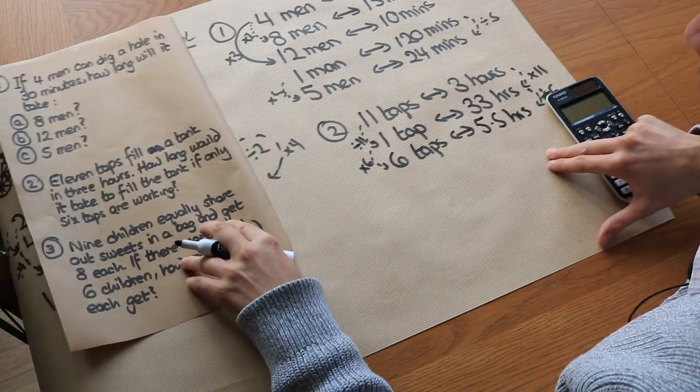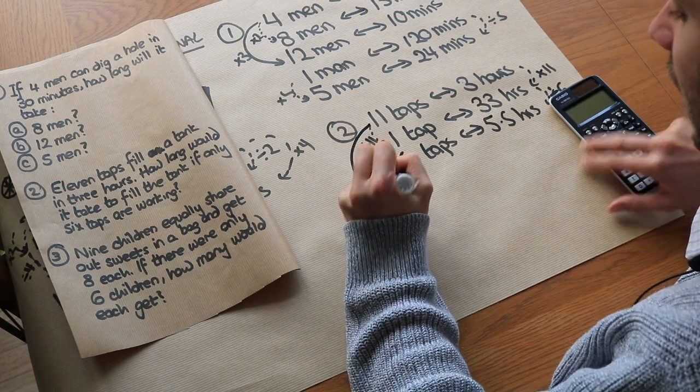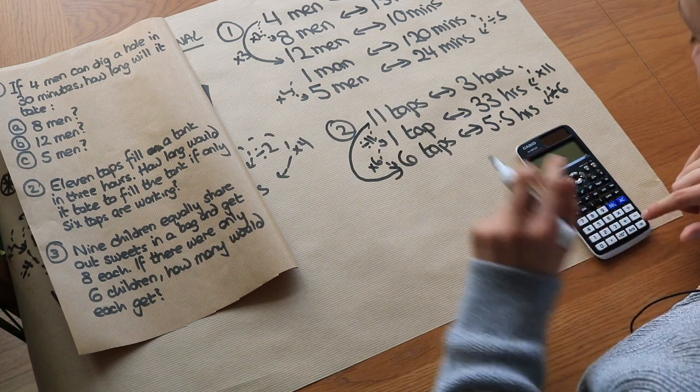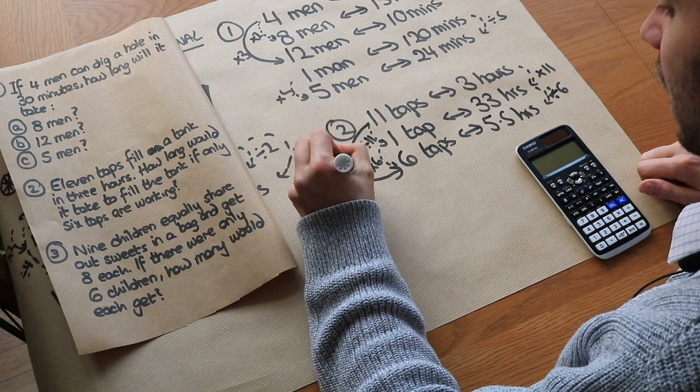But we could have used the original method. We could have worked out the direct scaling between 11 and 6. So remember, to find out how many times bigger 6 is than 11, we divide them. So it's 6 divided by 11, which is 6 elevenths. So we're timesing by 6 elevenths.